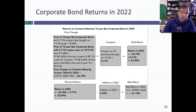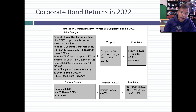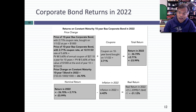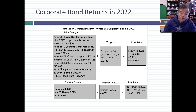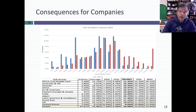Over the course of the year, your price change would have been minus 26.7%, partially compensated — very partially — by the coupon of 2.71%. During the course of the year, your nominal return on a corporate bond was minus 23.99%. That was also the worst year in history in terms of nominal returns on an investment-grade bond. In real terms, taking the 6.42% inflation rate, your real return in 2022 was minus 31.12%. If it was a bad year for T-bonds, it was an even worse year for corporate bonds.